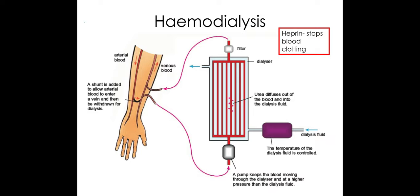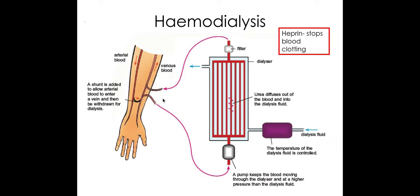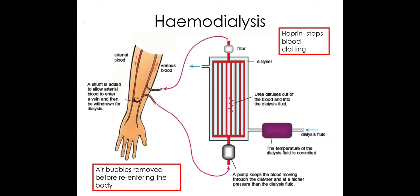A key requirement here is heparin, a drug given to the patient that stops blood clotting. We do not want the blood to clot within the machine as it will stop the whole process, and we don't want blood clots re-entering the individual as that can cause damage. Also, before the blood is re-entered into the body, air bubbles must be removed from the process as well.